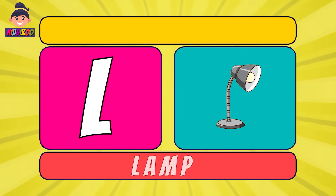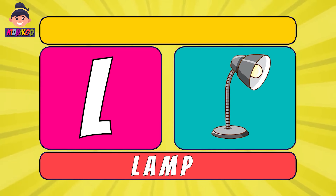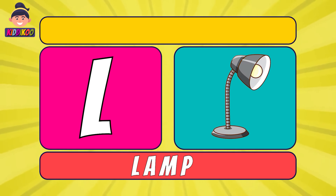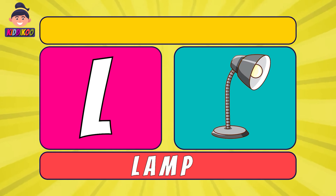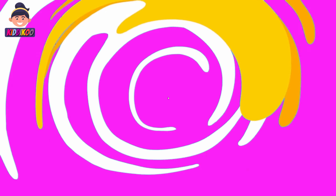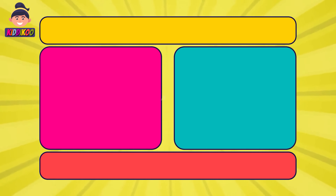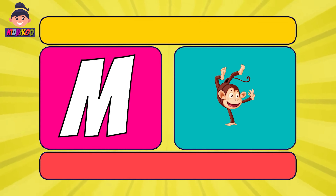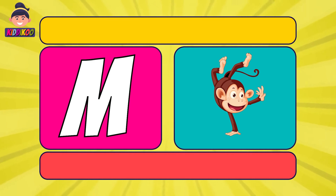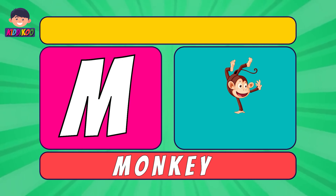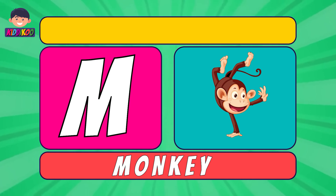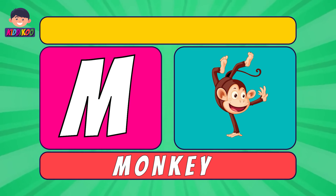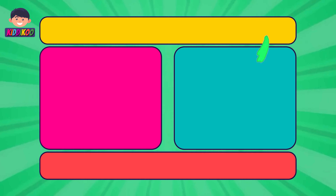Next letter is L. L for Lamp. Lamp. Next letter is M. M for Monkey. Monkey.